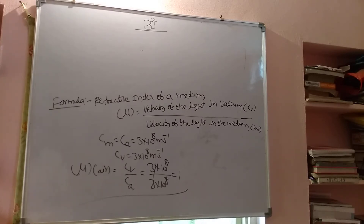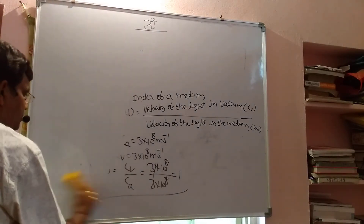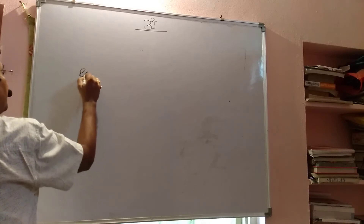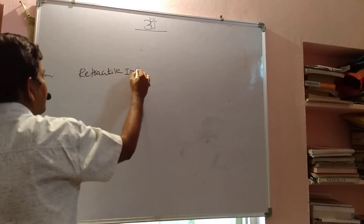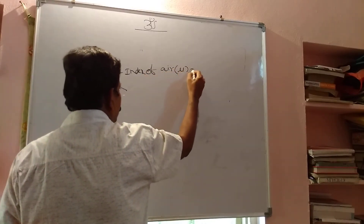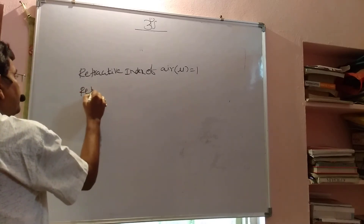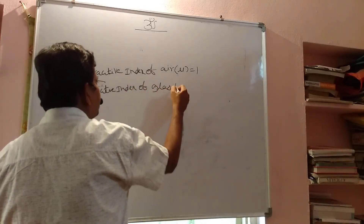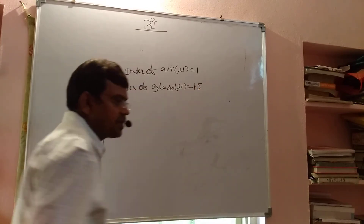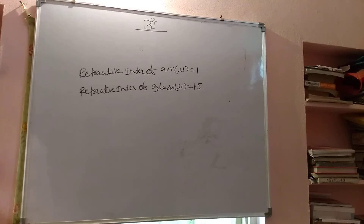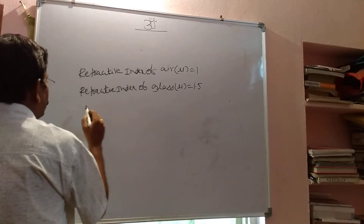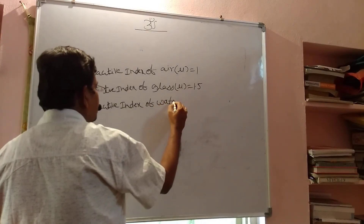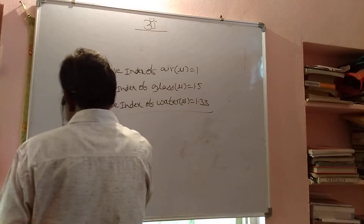Remember some key refractive index values: the refractive index of air is 1; the refractive index of glass is generally 1.5, though it can also be 1.4 in some cases; and the refractive index of water is taken as 1.3. Always remember these values, as they may not be given in some problems.